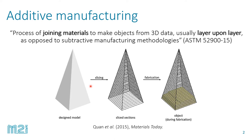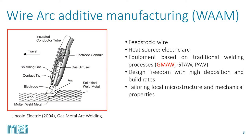In this work we're interested in metal additive manufacturing for large components. One good candidate for manufacturing large components is Wire Arc Additive Manufacturing. As the name suggests, it uses wire as feedstock material and an electric arc to melt this wire and deposit the material. It can be further categorized based on the underlying welding process, such as gas metal arc welding, gas tungsten arc welding, and plasma arc welding.